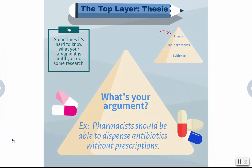For example, let's start with the top block. We have an example argument here: pharmacists should be able to dispense antibiotics without prescriptions. Usually we would have a map sentence here telling us the rest of the reasons, but it wouldn't fit, so let's go to the next level of blocks to see my reasons.